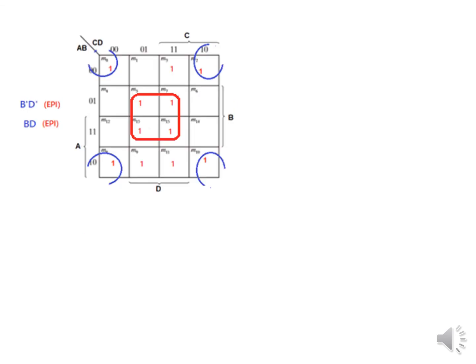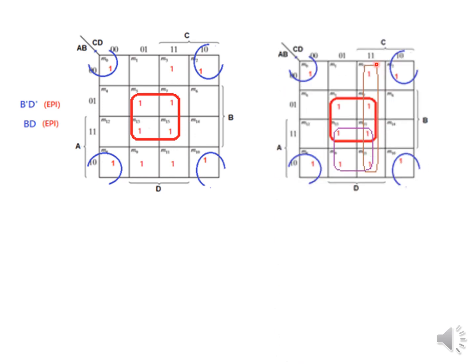As before, we clean the slate and keep only the EPIs. These two are the EPIs, so we keep them. Now we have to take care of the three remaining uncovered values. The first option is: these two covered by one grouping and the last one covered by another grouping. We include the essentials B-dash D-dash and A B-dash, plus two new terms: CD and AD. So one function expression is f = B-dash D-dash + A B-dash + CD + AD.